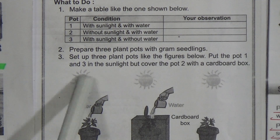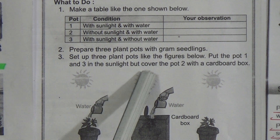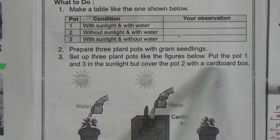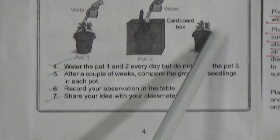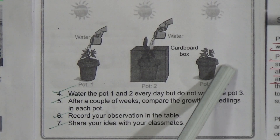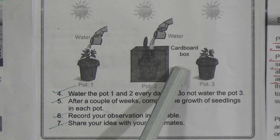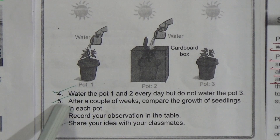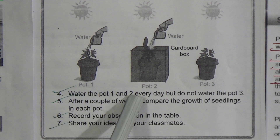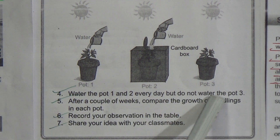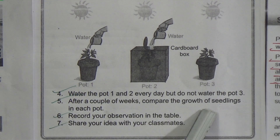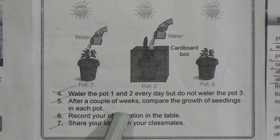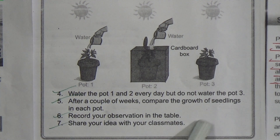Put pot 1 and pot 3 in the sunlight but cover pot 2 with a cardboard box. Water pot 1 and pot 2 every day but do not water pot 3. After a couple of weeks, compare the growth of seedlings in each pot. Record your observation in the table and share your ideas with your classmates.